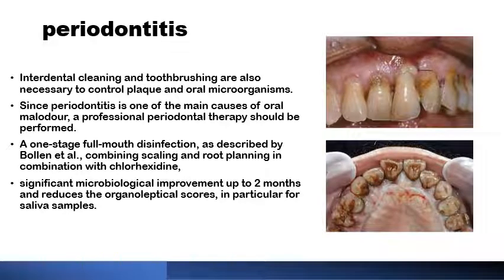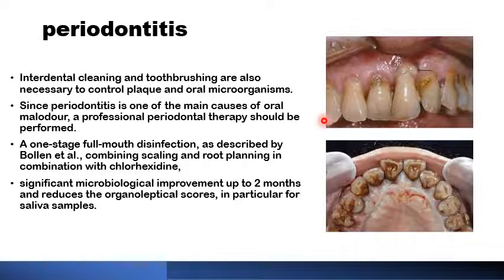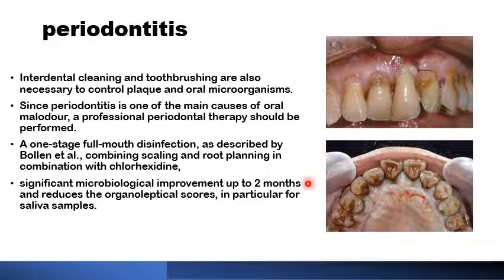The second most important cause for bad breath is periodontitis. Regular interdental cleaning by flossing and tooth brushing should be carried out on a regular basis to control plaque formation and reduce microorganisms in the oral cavity. If this fails to control the periodontitis, a one-stage full mouth disinfection by professional periodontal therapy — combining full mouth scaling, root planing, and an oral antiseptic like chlorhexidine — has shown a prolonged effect for almost two months.